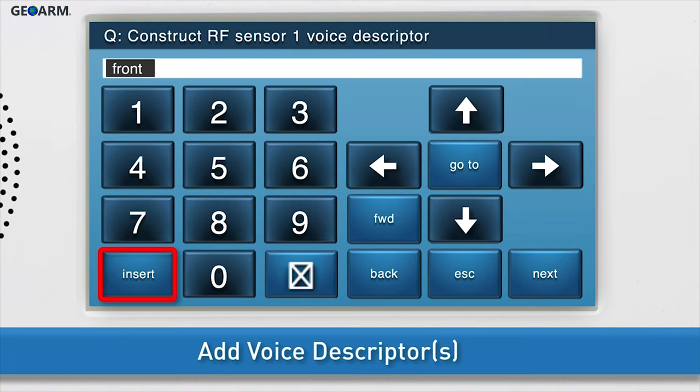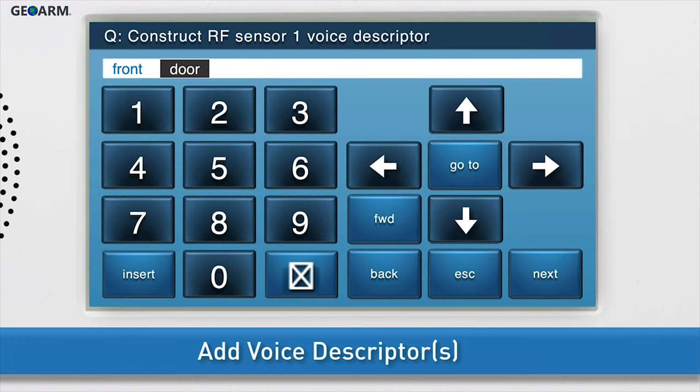To add another word, press insert again and repeat the steps just discussed. You can add up to five words. Once the desired word or words displays in the answer box, press the down arrow to go to the next sub-question.